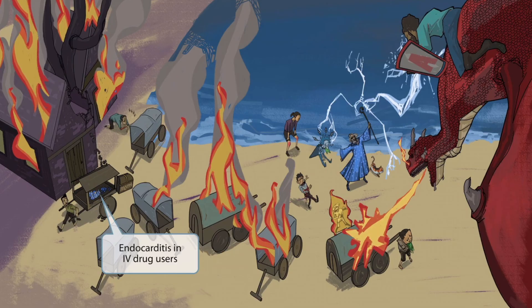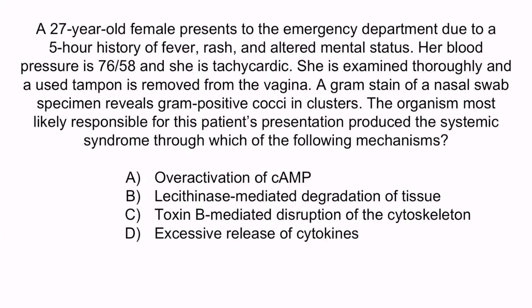Now let's review with a question. A 27-year-old female presents to the emergency department due to a 5-hour history of fever, rash, and altered mental status. Her blood pressure is 76 over 58, and she's tachycardic. A used tampon is removed from the vagina. A gram stain of a nasal swab specimen reveals gram-positive cocci in clusters. The organism most likely responsible produced the systemic syndrome through which mechanism? A, overactivation of cyclic AMP; B, lecithinase-mediated degradation of tissue; C, toxin B-mediated disruption of the cytoskeleton; or D, excessive release of cytokines.